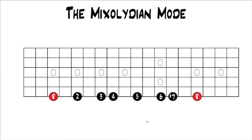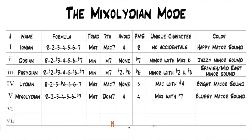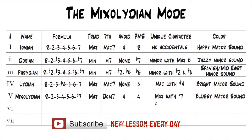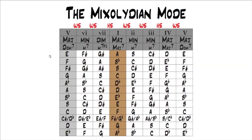Your parent major scale is the fourth. So for G Mixolydian, the notes are G, A, B, C, D, E, F, back to G — and C would be your parent major scale. Your steps when rearranged with G as the root are: whole step, whole step, half step, whole step, whole step, half step, whole step. The unique characteristic of the Mixolydian mode is that it's a major triad with a flat seven, creating a very bluesy sound — it's the only major mode with a flat seven, while the others have major sevens.